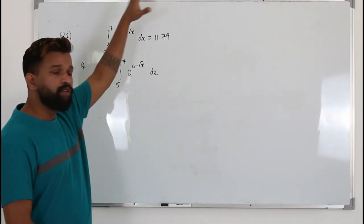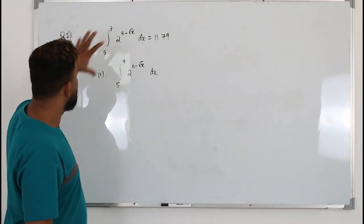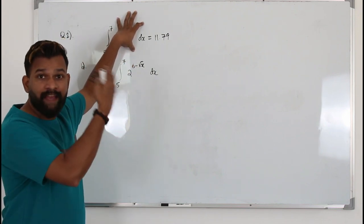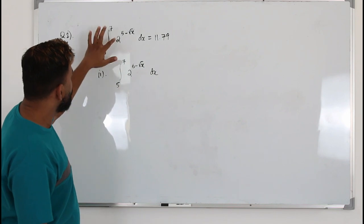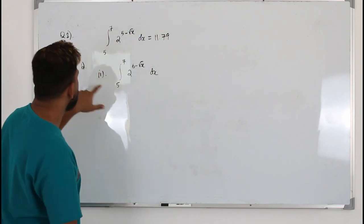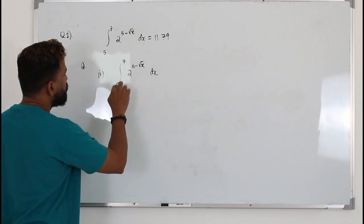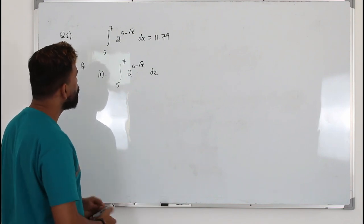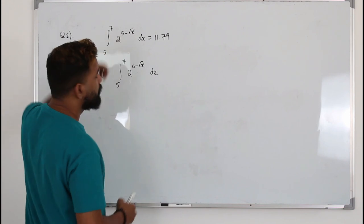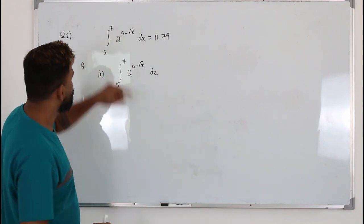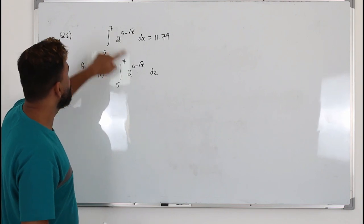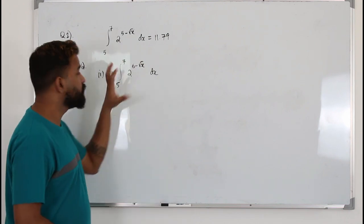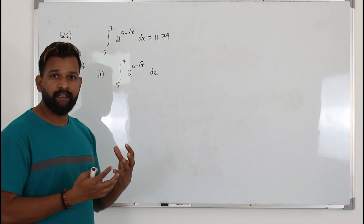Now we are at part B. Usually when you go through past papers, there will always be a part B question where you need to use the answer you got from part A. But when you compare them, the limit will always be the same, 5 to 7. You don't need to worry about it. But when you look at the function, they will usually add something extra to the function. Instead of 5, you have 6 here. They want you to find this integral. We are not going to integrate this by considering it as a separate question.